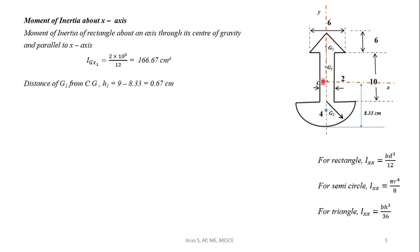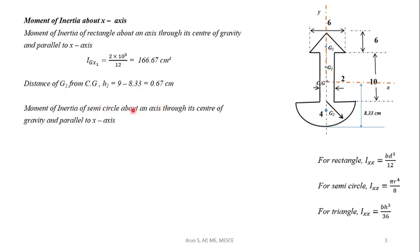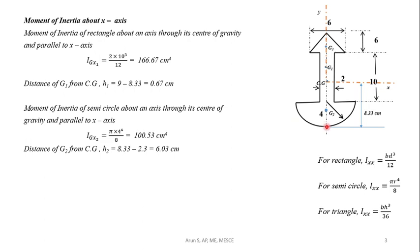The distance h1 between G1 and CG: G1 is at y1 = 9 cm, CG is at 8.33 cm, so h1 = 0.67 cm. For the semicircle, IGx2 = πr⁴/8 = 100.53/8 cm⁴. The distance h2 between G2 and CG: G2 is at y2 = 2.3 cm and CG is at 8.33 cm, giving h2 = 6.03 cm.